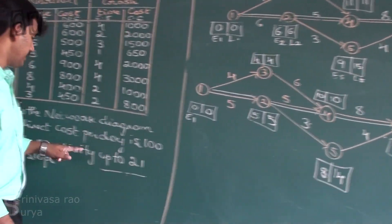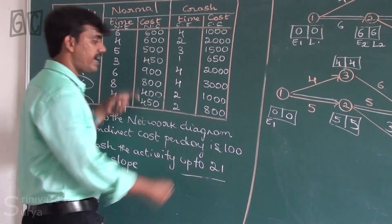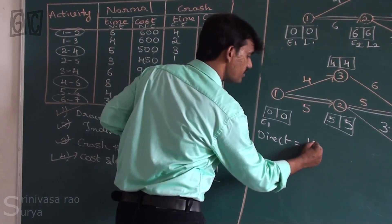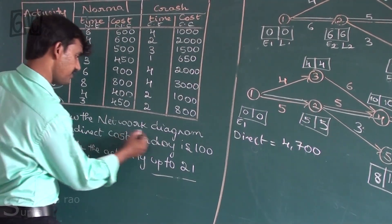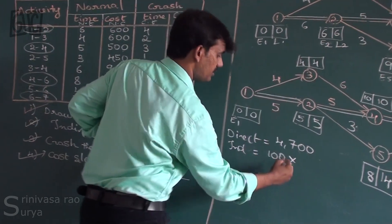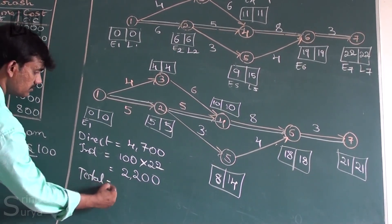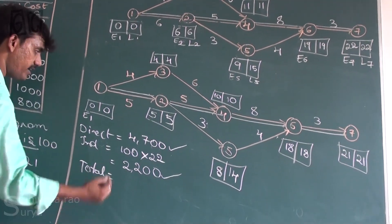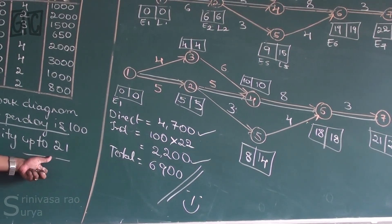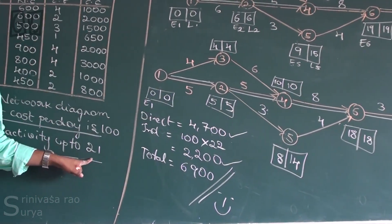We have successfully crashed the activity to 21 days. The direct cost after crashing is 4,700 rupees. The indirect cost is 100 rupees per day times 22 days equals 2,200 rupees, giving a total cost of 4,700 plus 2,200 equals 6,900 rupees. If you need to crash further, take the next minimum cost slope and repeat the process.